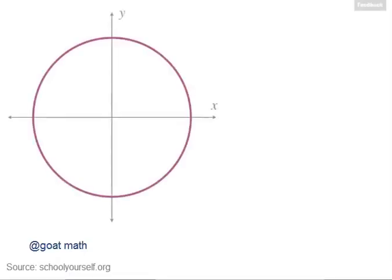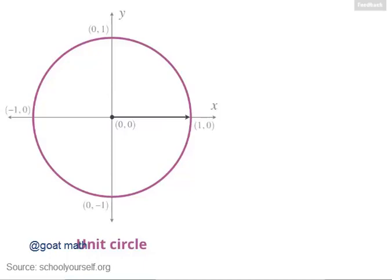Let's use the unit circle to evaluate trig functions for negative angles. Here's the unit circle, which is a circle centered at the origin, meaning the point (0,0). The radius of the unit circle is 1, so it passes through the points (1,0), (0,1), (-1,0), and (0,-1).